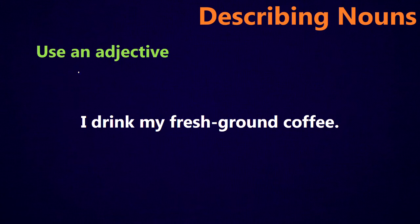You can also use an adjective to describe the noun. For example, I drink my fresh ground coffee. Coffee is the noun, and fresh ground is a compound adjective describing it — meaning the coffee wasn't ground weeks ago, but ground right before brewing, which makes the flavor much, much better.